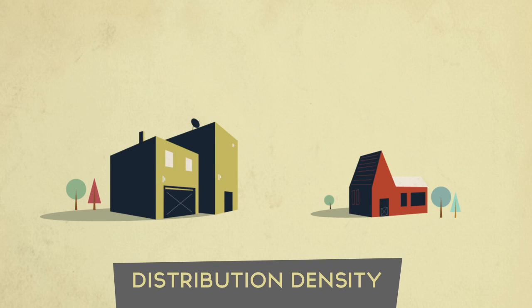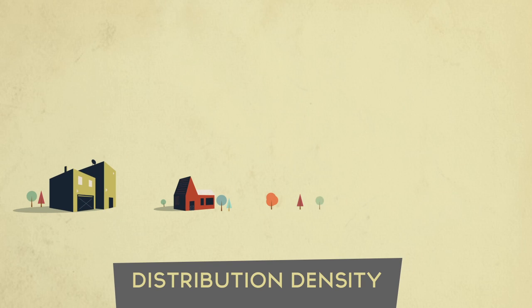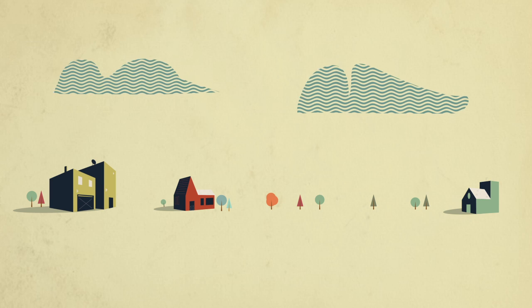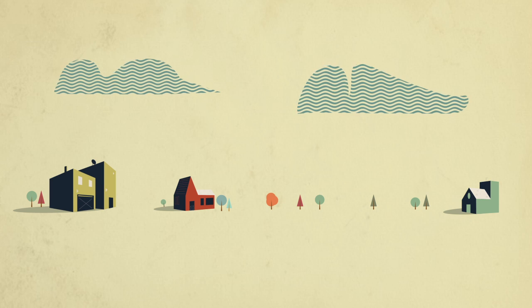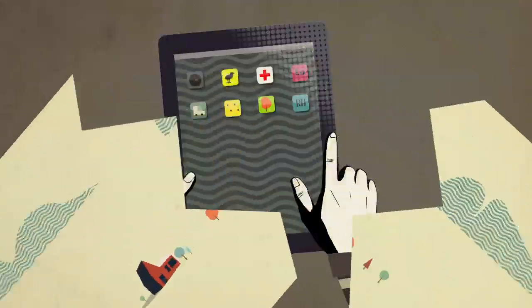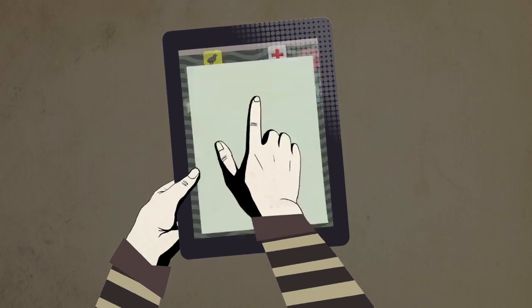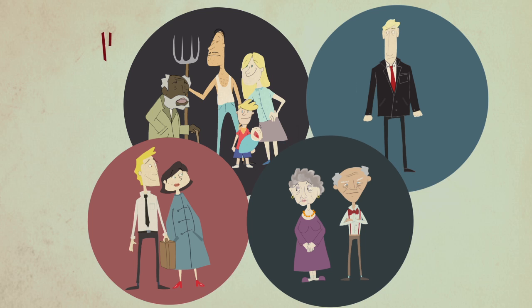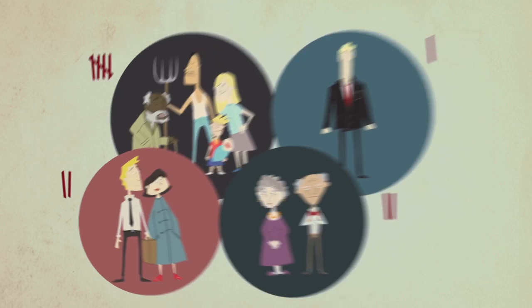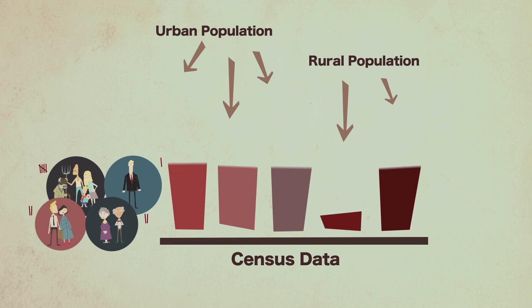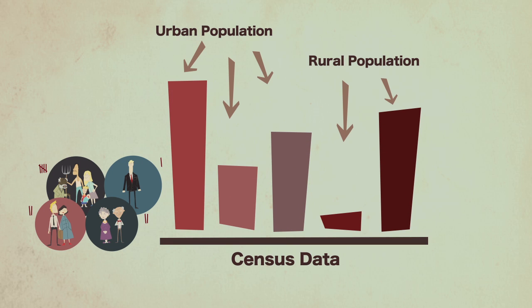Where do most people live? Are they close together or far apart? People are not distributed evenly around the world. Every ten years, each country carries out a census to count the total number of people and record where they are living. Thanks to the data these provide,